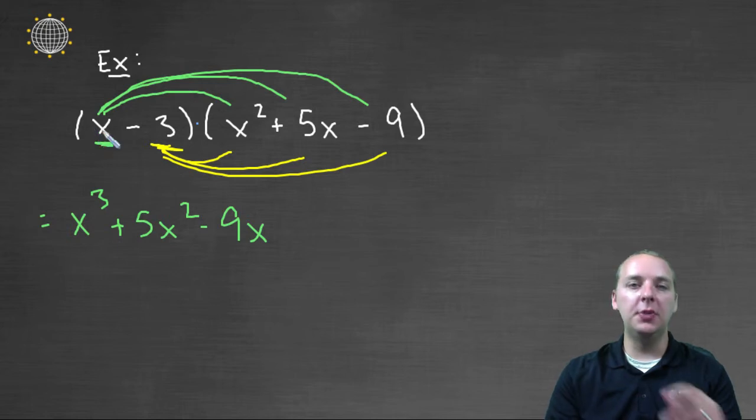So the first term has been distributed to everybody in the trinomial. Alright, next we'll change colors, let's now move on to the right to the negative three and do the same thing.